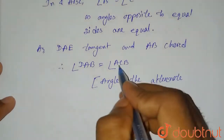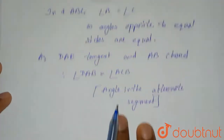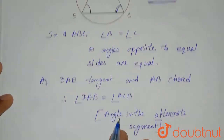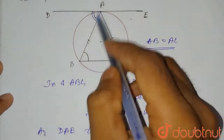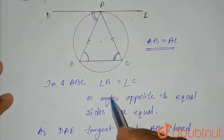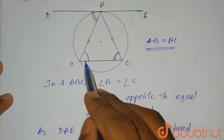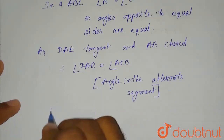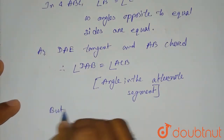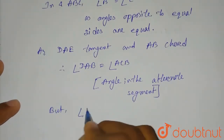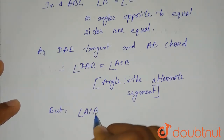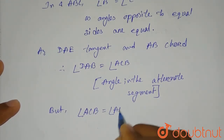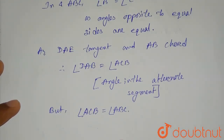But we have proved that angle ACB equals angle B. Angle ACB and angle ABC are the same, as we have taken angle ABC as B. So we can say that angle ACB equals angle ABC.